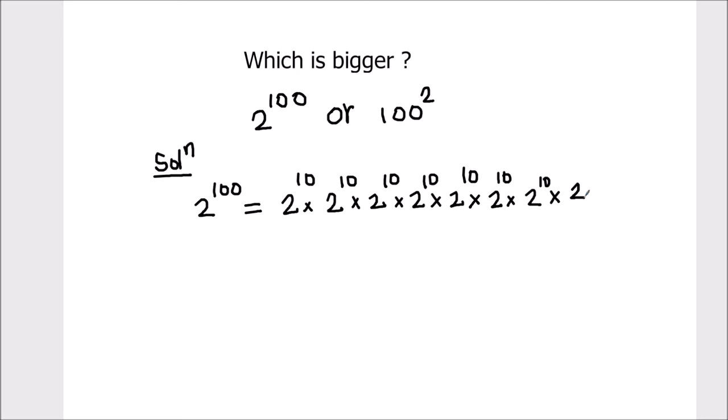So that's going to be 10 times. This is 2 raised to power 100, or we can write 2 raised to power 100 as - we know that 2 raised to power 10 is 1024. So that's 1024 times 1024 times 1024, up to 10 times.